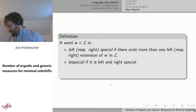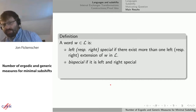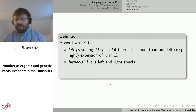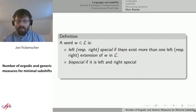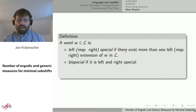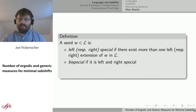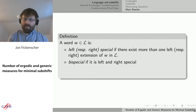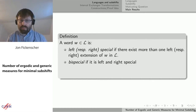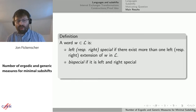The next result is a little bit older but requires an extra definition. The first two on my list are more standard. A word in the language is left special if I can extend it on the left by more than one symbol, and respectively right special if I can extend it on the right by more than one symbol.